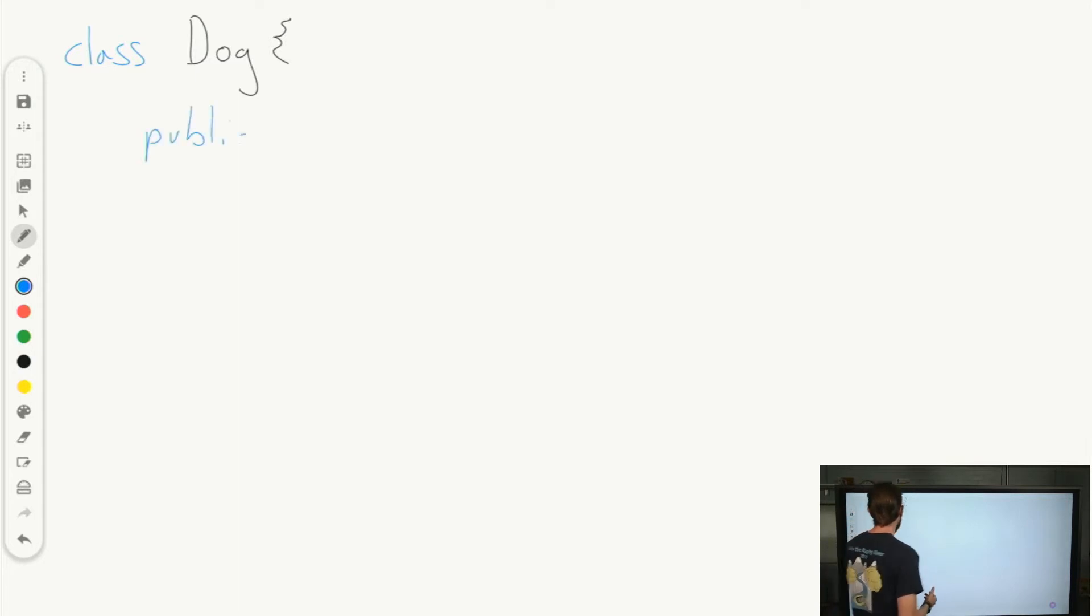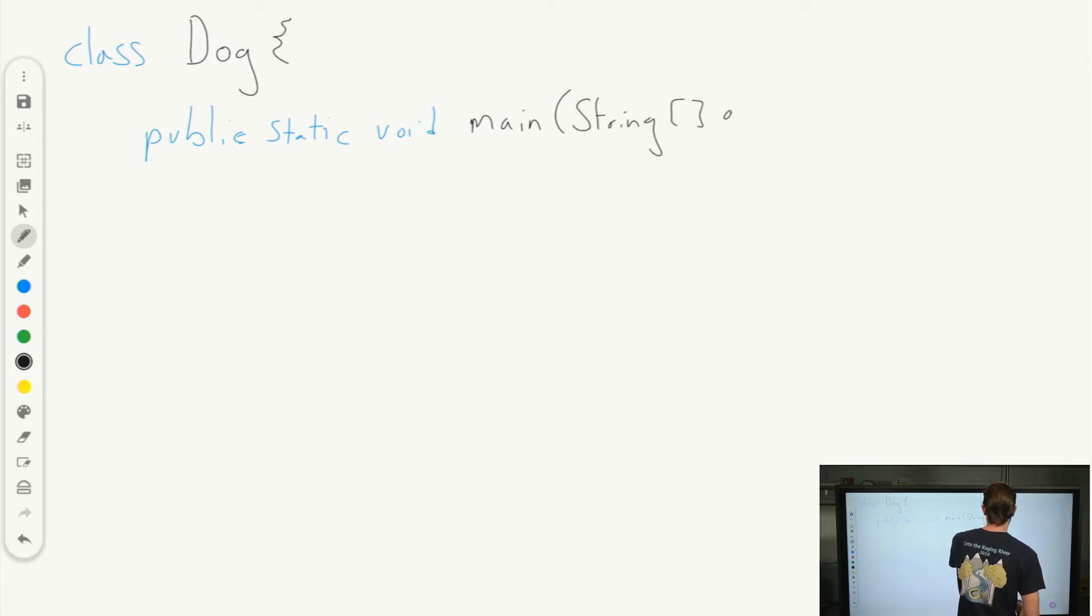So in our dog class that we have used before, we may have seen something like this. Or you have definitely seen it. Public, static, there should be a lowercase s, void. And then it says main, string, args. And then everything that you have done so far in this class has lived between these two curly braces. And what you've actually done is you've written a method. You've written this method called main. So this is the main method.